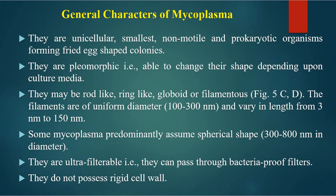General characters of mycoplasma: they are unicellular, smallest, non-motile, and prokaryotic organisms forming fried-egg-shaped colonies. They are pleomorphic, meaning able to change their shape depending upon the culture media. They may be rod-like, ring-like, globoid, or filamentous. The filaments are uniform in diameter and vary in length from 3 nm to 150 nm. Some mycoplasma predominantly assume a spherical shape. They are ultra-filtrable, meaning they can pass through bacteria-proof filters. They do not possess a rigid cell wall — the cell wall is absent.